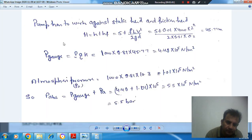So here, pump has to work against static head as well as friction head. So H is Hs plus Hf. Static head is given as 5, and friction head is FLV squared by 2GD, where F is friction factor, L is length, V is velocity, D is diameter.